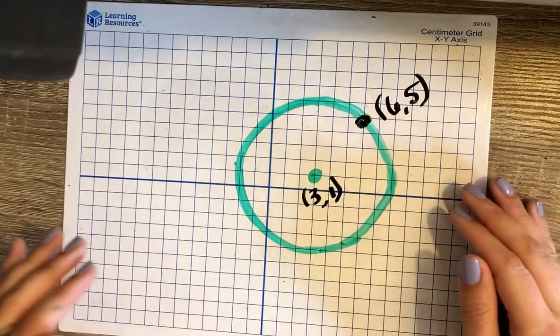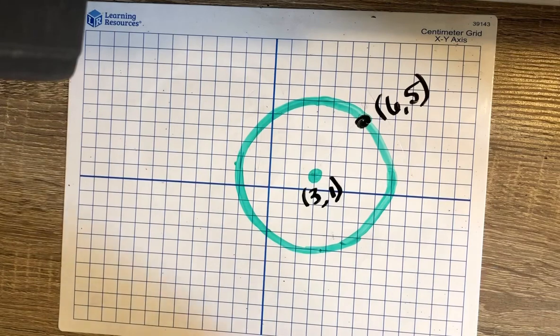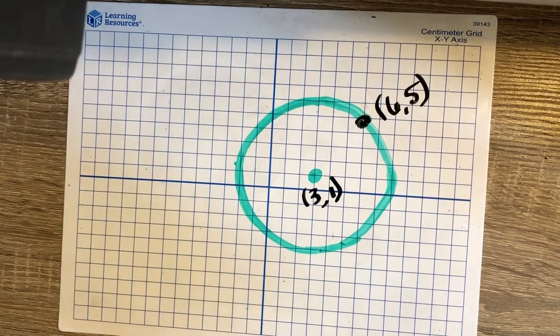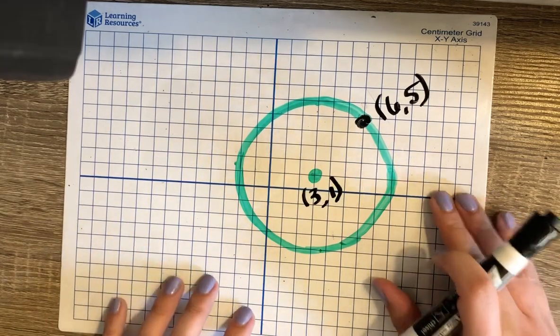You might be asked, given a circle on a grid or given the center of a circle and a point on the circle, to determine either the circumference or the area of that circle. For either of those formulas we need to know what the radius of the circle is, so that's where the grid or graph comes into play.